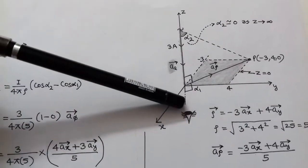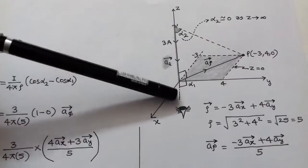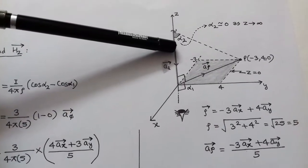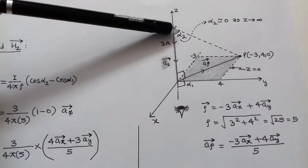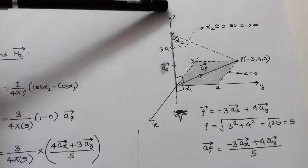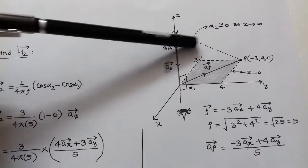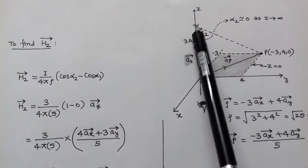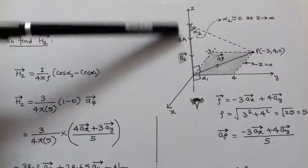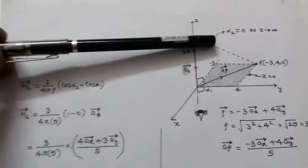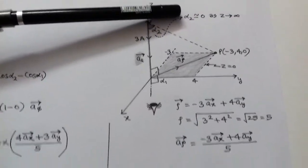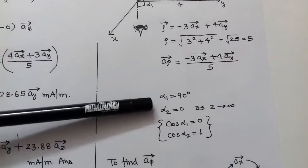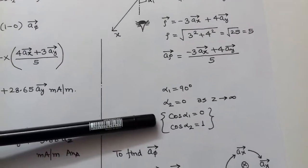Since point P is situated on the xy-plane and z is normal to this plane, angle α1 is 90 degrees. As for α2: since this is a semi-infinite line and z tends towards infinity, α2 approaches 0, because the perpendicular distance rho is very small compared to the semi-infinite line. So after putting α1 = 90° and α2 = 0, we get cos α1 = 0 and cos α2 = 1.